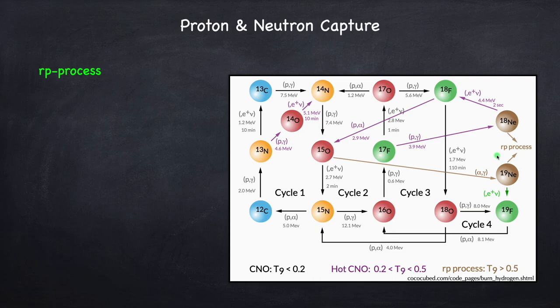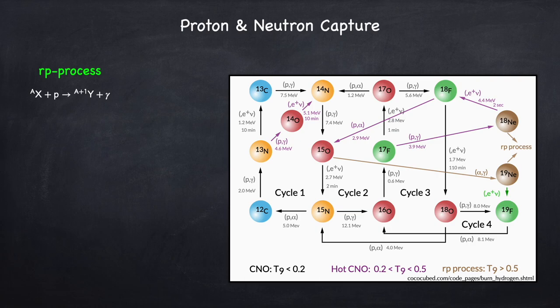The RP process has nothing to do with the CNO cycle or hydrogen fusion. It will kick in if the temperature is sufficiently high. It's basically exactly what it sounds like — rapid proton capture. You're going to pile on protons one after another, building up heavier nuclei. We'll have some seed nucleus, which we'll call X, and it's going to have some mass A — A being the total number of nucleons in the nucleus, meaning the total number of protons and neutrons.